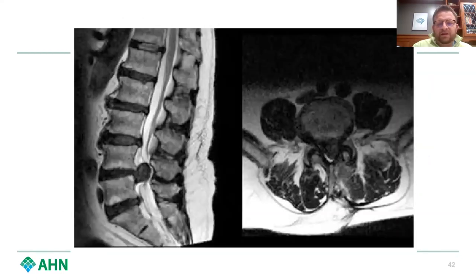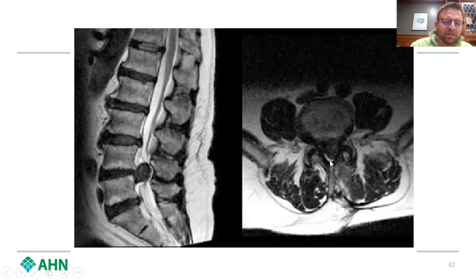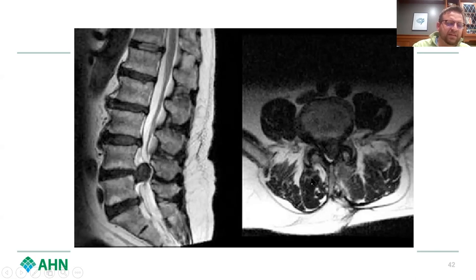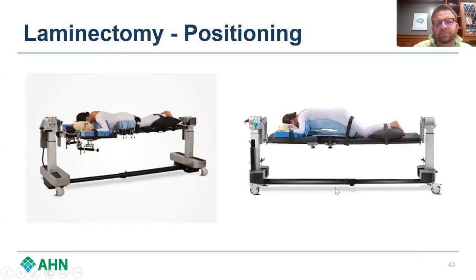Going back to this picture of this big disc herniation — you can see the problems it presents. Can you really approach this through a unilateral approach, or do you need a bilateral approach to get it out? I would argue this should probably be done as a laminectomy, taking the whole lamina off to get that large disc herniation out. So that's our segue into full laminectomy.